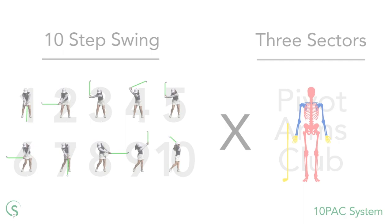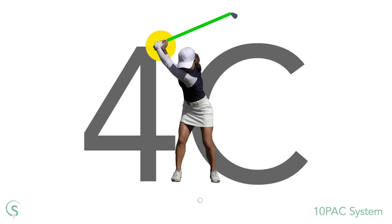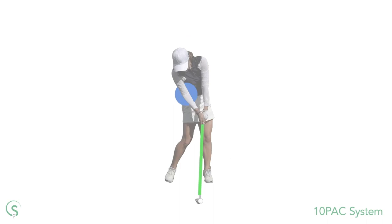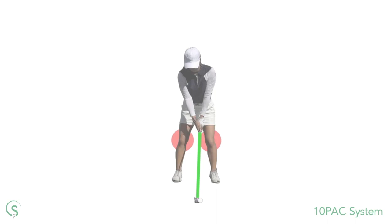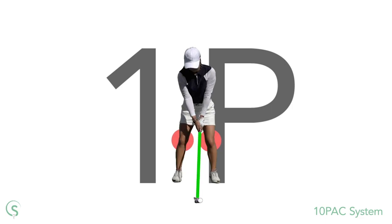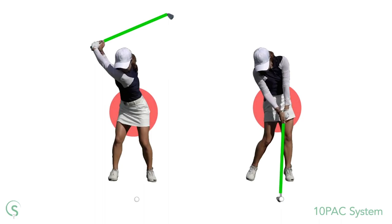So if you're looking at the hands at the top of the backswing, the 10-pack reference would be 4C — step 4, sector C. The right elbow at impact would be 7A. The knees at address would be 1P. If we're looking at a period of time rather than a snapshot — let's say the pelvis motion during the downswing — we can call that 4-7P.